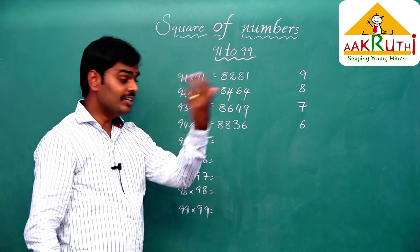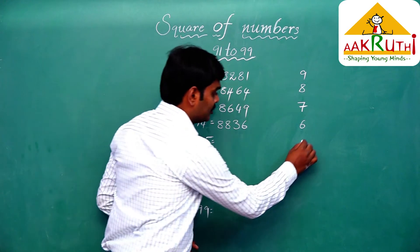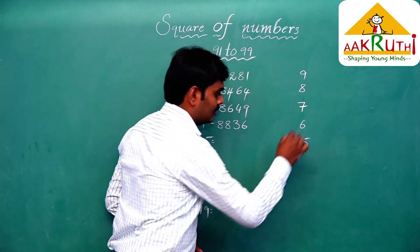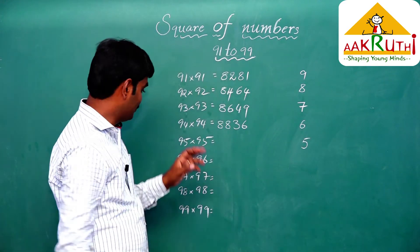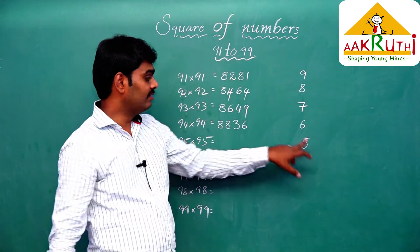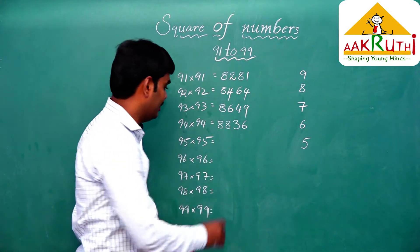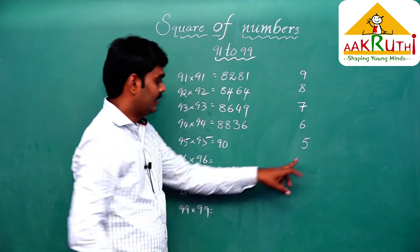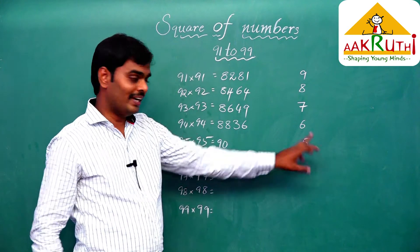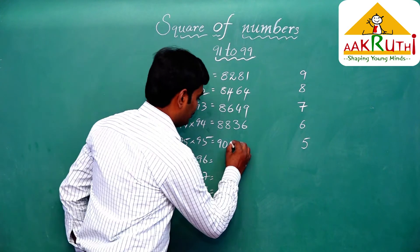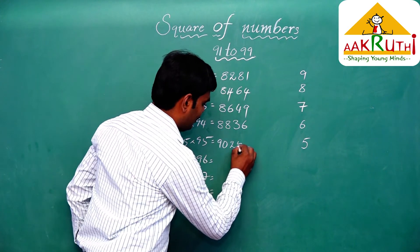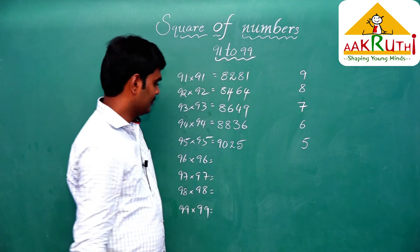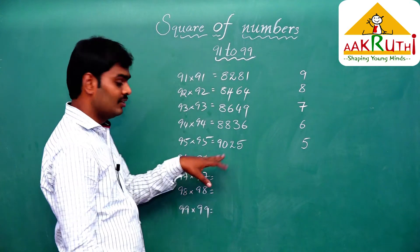Now 95 into 95: 95 is 100 minus 5. The first step is 95 minus 5, which is 90. The second step is 5 squared, which is 25. So 95 squared equals 9025.